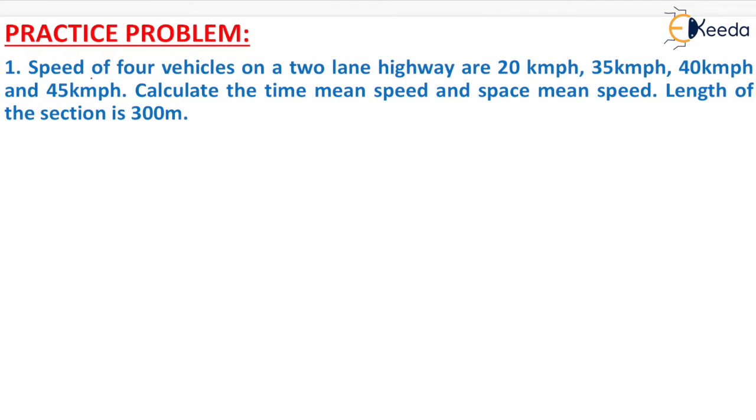The question is: speeds of four vehicles on a two-lane highway are 20 km per hour, 35 km per hour, 40 km per hour, and 45 km per hour. Calculate the time mean speed and space mean speed. Length of the section is 300 meters.